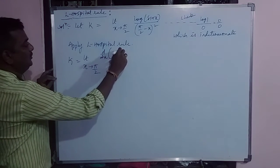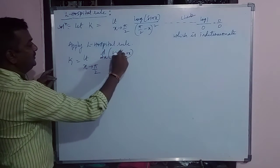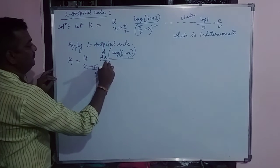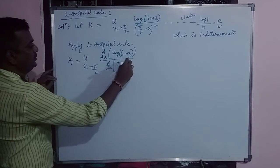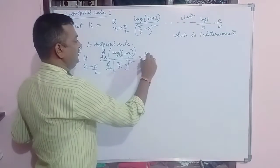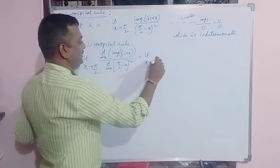For your convenience, I am writing this is log of sin x divided by pi by 2 minus x whole square. I will write here itself, limit as x tends to pi by 2.